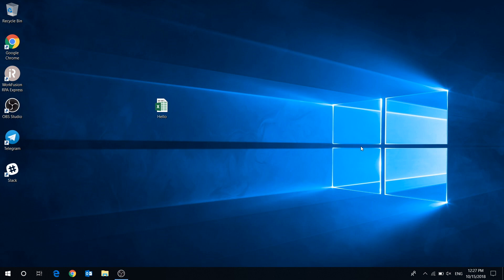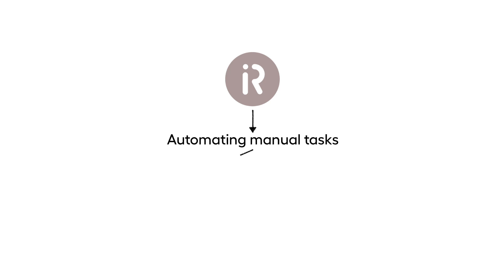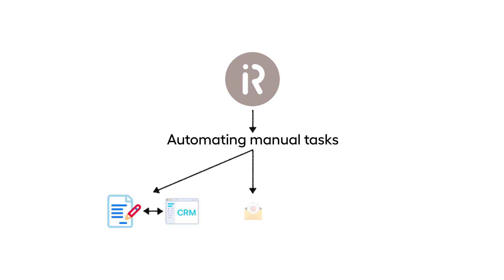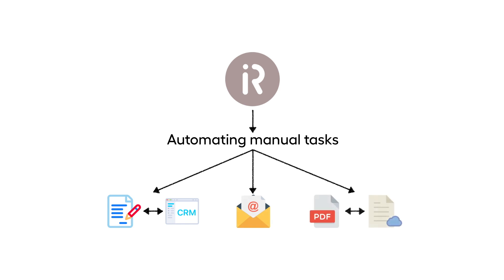Hi everyone! This video will help you to get started with WorkFusion RPA Express. RPA Express is software designed to help a new user with automating manual tasks, like copying and pasting data from one source to another, sorting emails, locating and extracting information in PDF documents, and many other use cases.